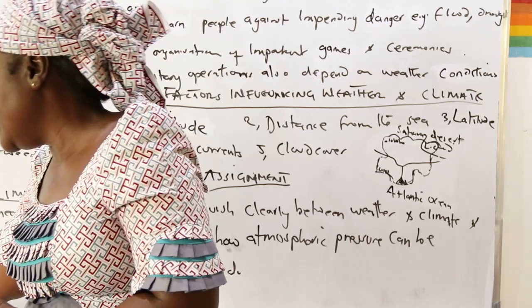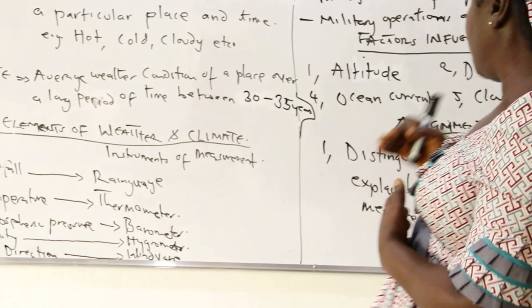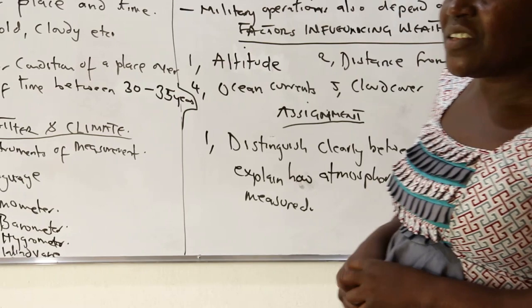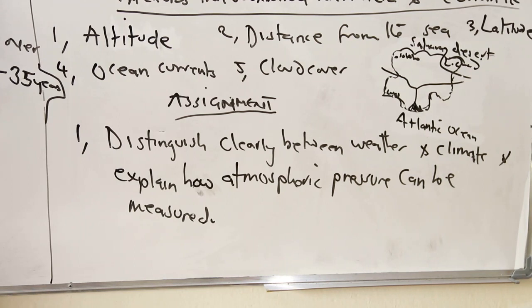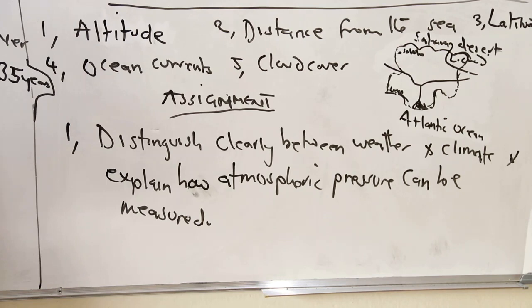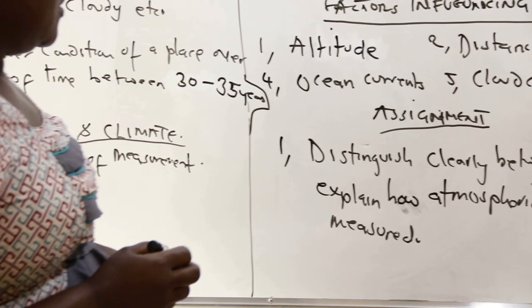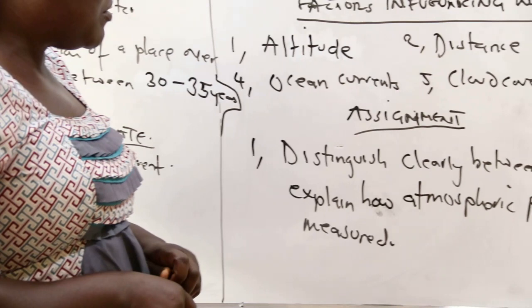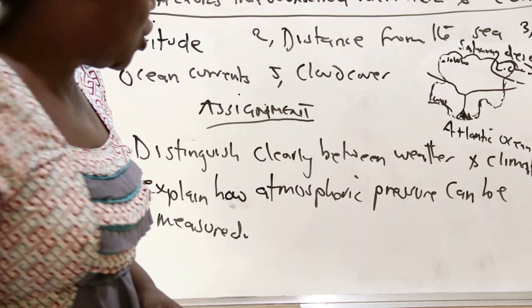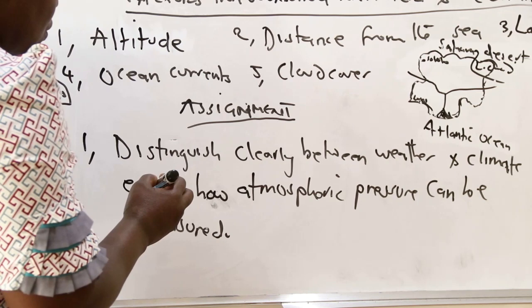By God's grace, in our next lesson we shall talk about how the elements of weather and climate can be measured. But for today, we are stopping the lesson here. I have an assignment for you: you will do the assignment and then send it through my WhatsApp page — the number is 08107998160.